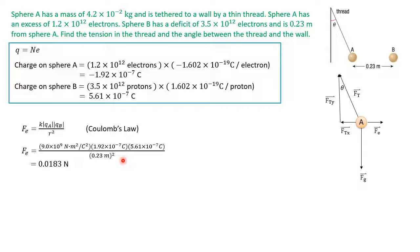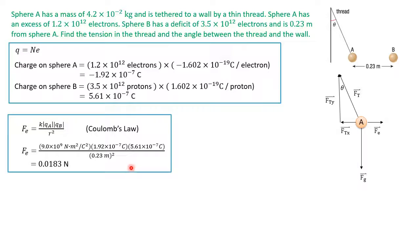This gives us 0.0183 Newtons. So the electrostatic force between sphere A and sphere B is 0.0183 Newtons.